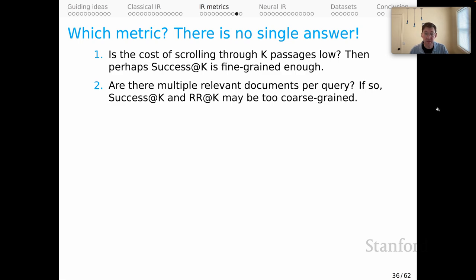Are there multiple relevant documents per query? If so, success and reciprocal rank are probably going to be too coarse grain because they're not sensitive to having these multiple relevant documents.